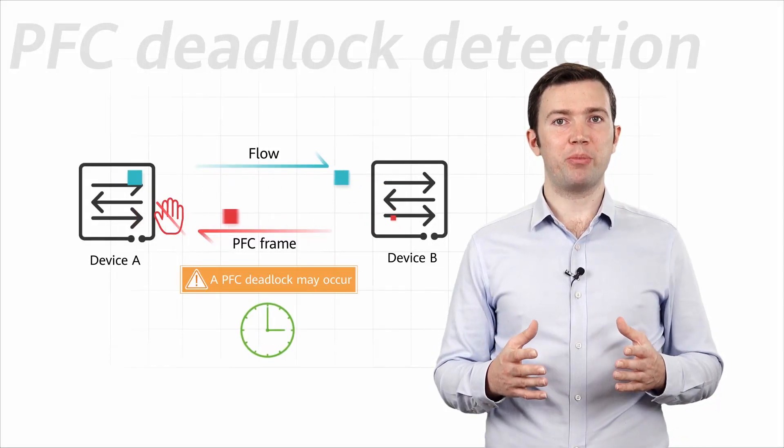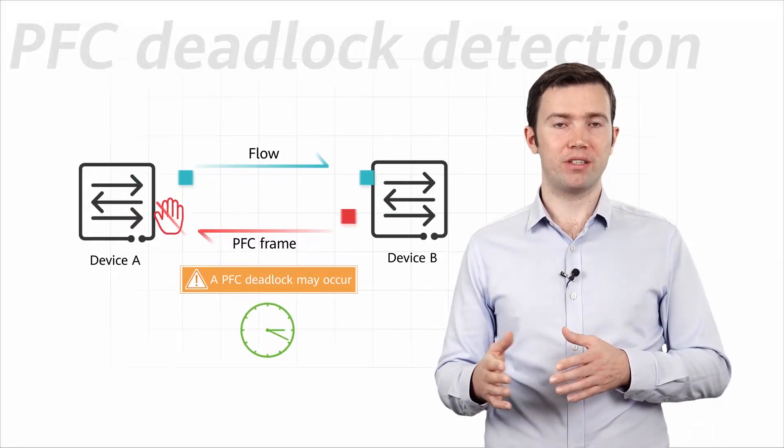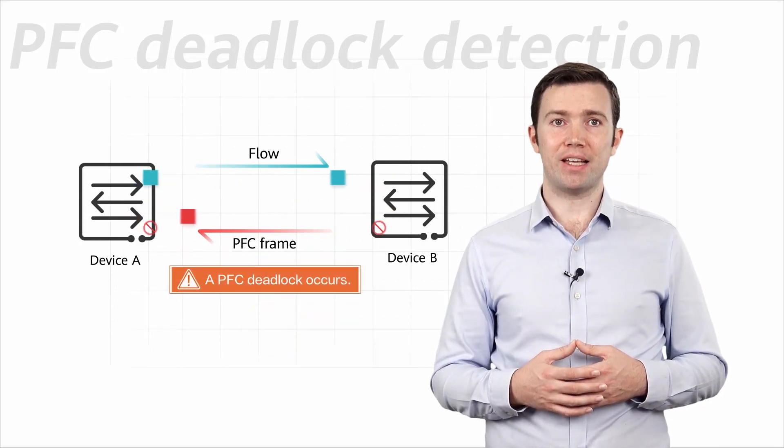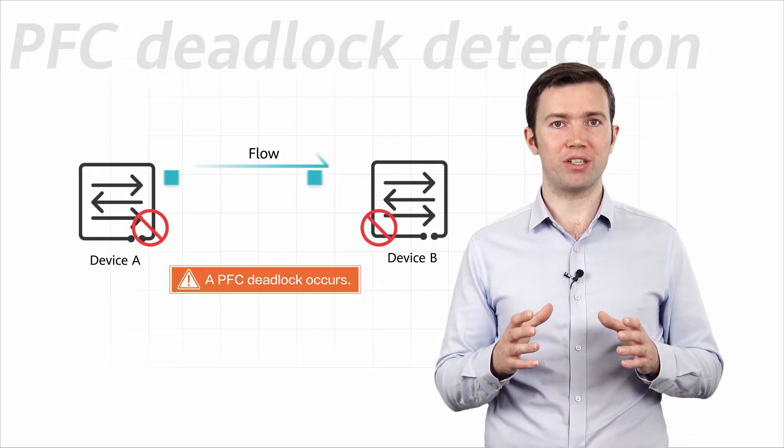If a large number of PFC frames are detected in several consecutive periods, the device considers that a PFC deadlock has occurred. In this case, PFC will be disabled to protect corresponding services.